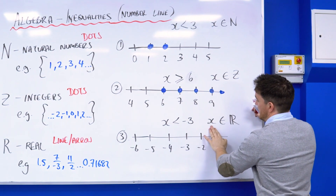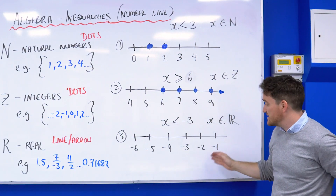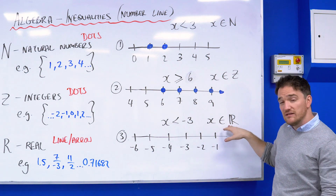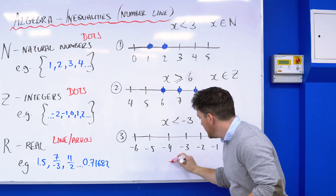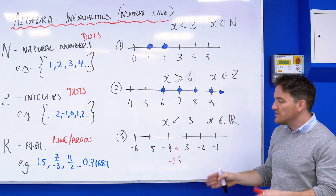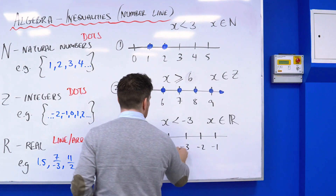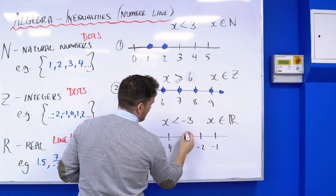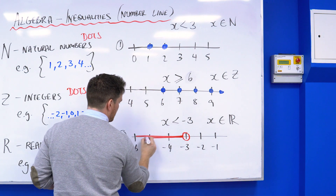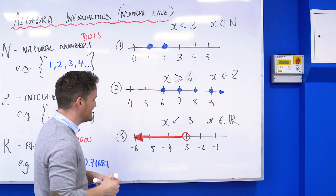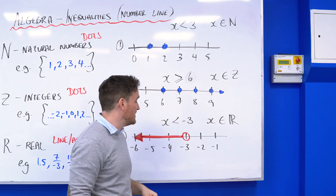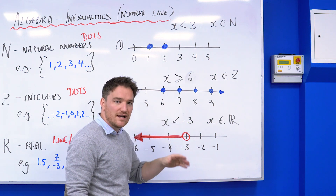The last example is for real numbers: x is less than minus three, x is an element of R. That means any number less than minus three — to the left on the number line — so minus four, minus five, minus six, and so on. But because it's real, minus three and a half is also acceptable, as is minus 4.2 or minus 100. To signify all those values, instead of dots I'm going to draw a circle at minus three and a thick line with an arrow pointing left. The circle means I'm not including minus three, but going right up to it — I could be as close as minus three point zero zero zero one.